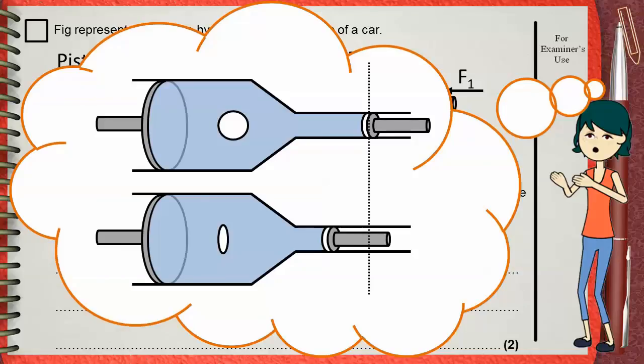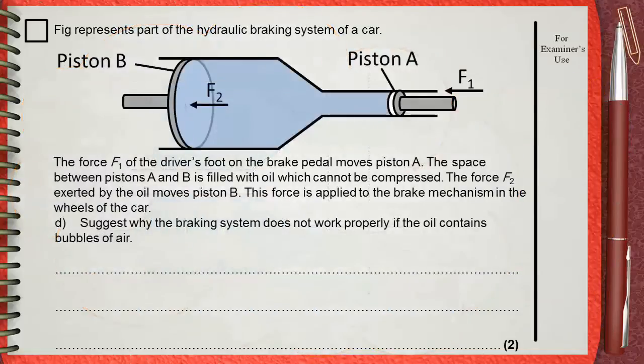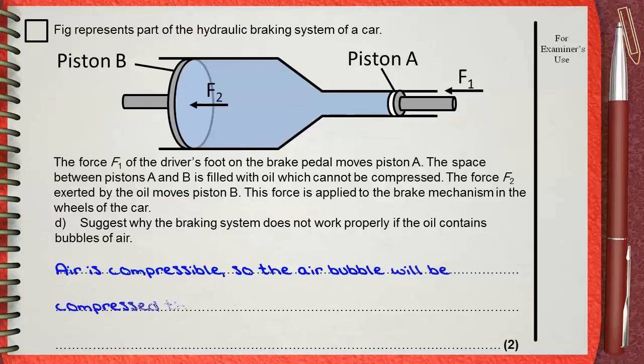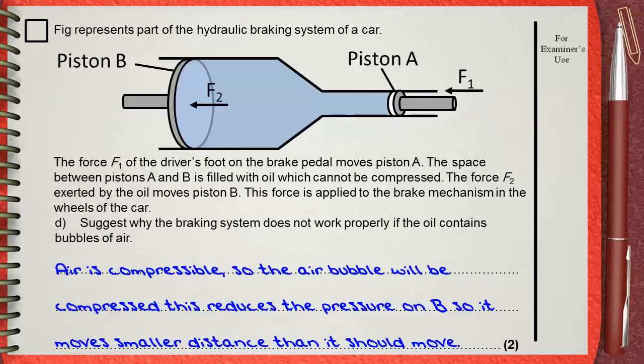So, we can say that air is compressible. So, the air bubble will be compressed. This reduces the pressure on B, so it moves smaller distance than it should move.